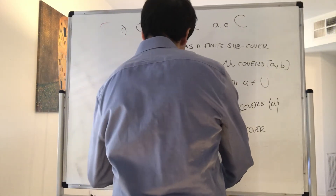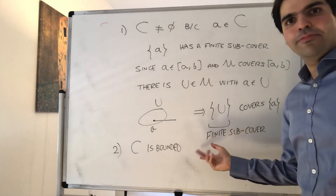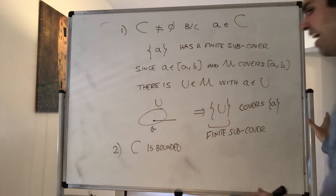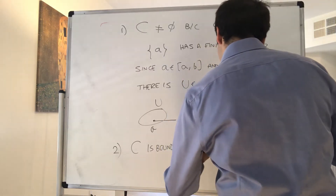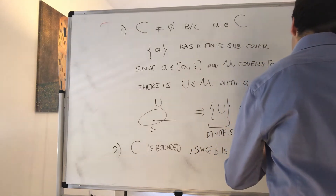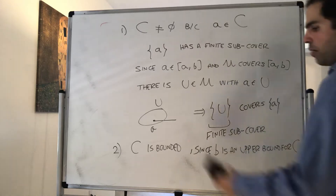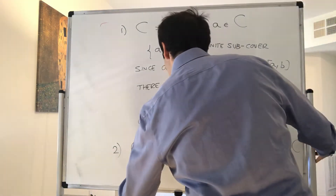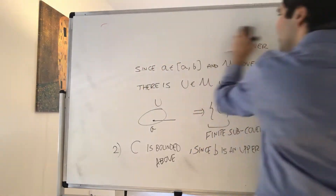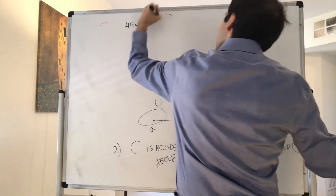Now, why is C bounded? By definition, C is all points in [a, b] that have a finite subcover, and therefore b is an upper bound for C. So we have a non-empty subset of ℝ that is bounded above, therefore C has a least upper bound. Let's call it little c, which is the supremum of C.